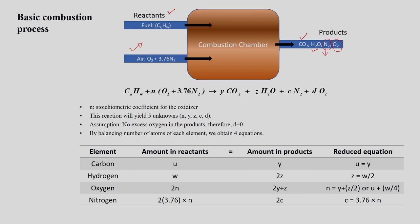If you consider a hydrocarbon fuel in the form of CuHw, we need to find out the amount of air required for the complete combustion of this fuel so that it produces completely oxidized products in the form of CO2 and H2O along with nitrogen.